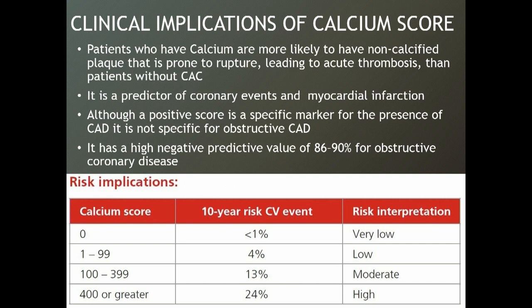Knowing plaque load is far more important than knowing the degree of narrowing — that's one of the biggest advantages of CT coronary. Regular catheter angiograms cannot detect plaque load. Calcium score is a predictor of coronary events and myocardial infarction. Although a positive score is a specific marker for coronary artery disease, it is not specific for obstructive coronary artery disease. In America, of people with high calcium scores who underwent standard catheter angiography, 90% — and even 82% of those who had myocardial infarction — did not have obstructive, occlusive coronary artery disease. It has a high negative predictive value of 86 to 90%.